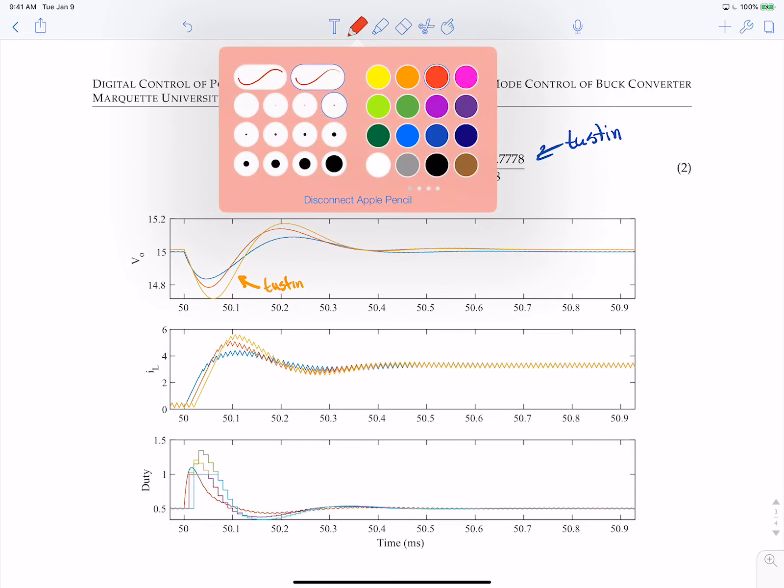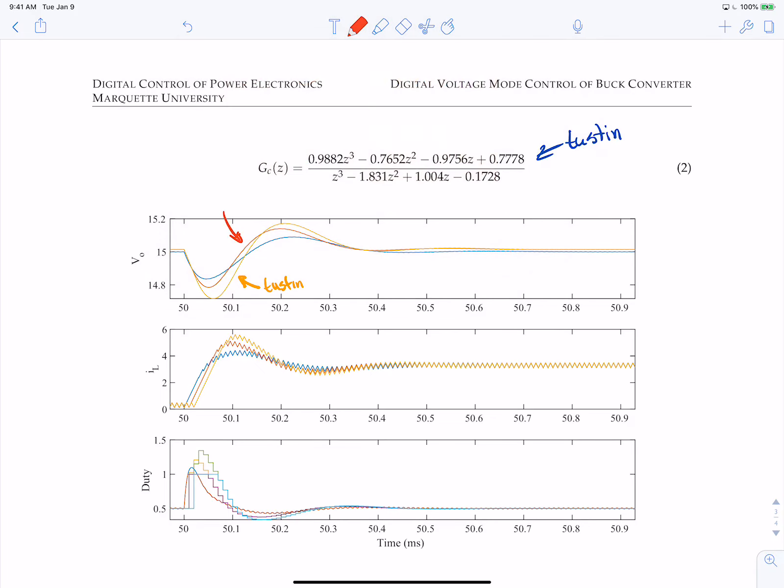and blue, which is our continuous time. And you can see they're all different. So this is why it's absolutely imperative that you check the output of your controller after you design this to make sure it's meeting your response time.